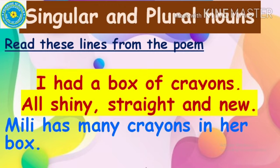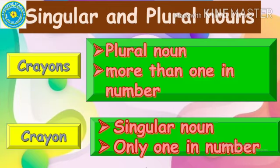Now read these lines from the poem, children: I had a box of crayons, all shiny, straight and new. Does Millie have many crayons in her box, or a single crayon? She has many crayons in her box. So crayons is a noun — it is a naming word. But crayons is a plural noun. Crayons means there is more than one crayon in number.